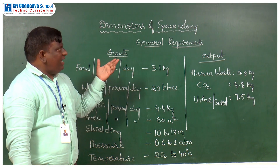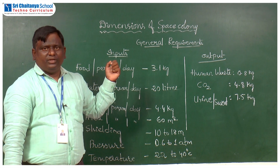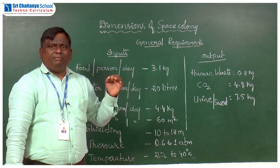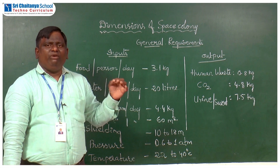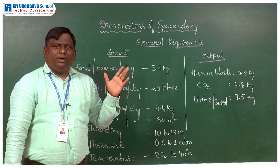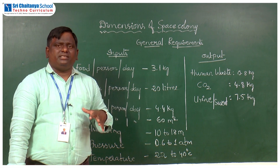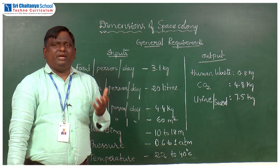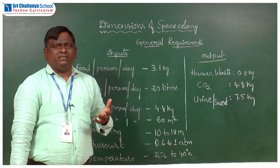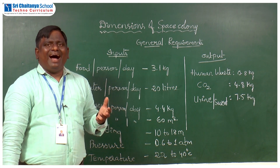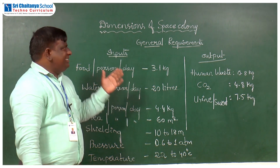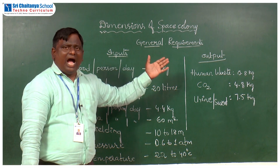A human being is the main person who will live inside the space colony. So based on his requirements, we will have our dimensions. The general requirements of humans inside the space colony are categorized into two parts: one is inputs, and the second one is outputs.